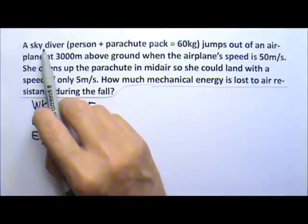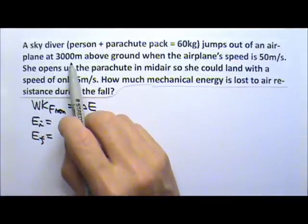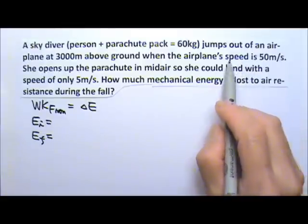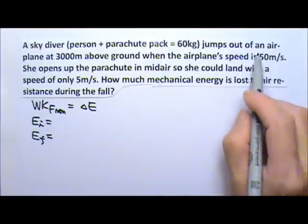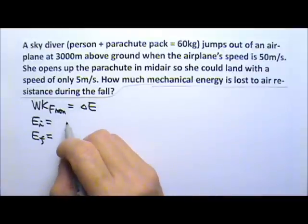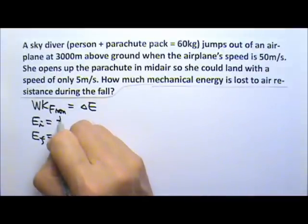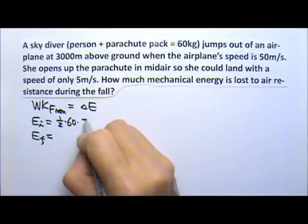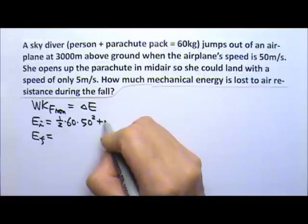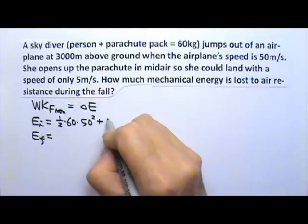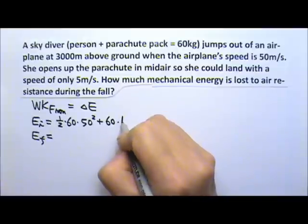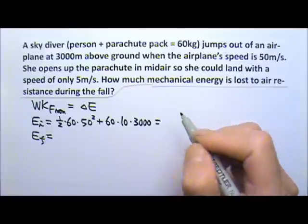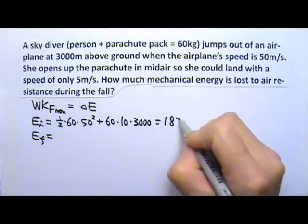Initially the skydiver is up high, so there is mgy. And the skydiver has the same speed as the airplane, so the skydiver would also be moving at 50 meters per second. So the skydiver has kinetic energy, one half mv squared, and she also has mgy, 3000 meters above ground. So if you do this calculation you'll get this much.